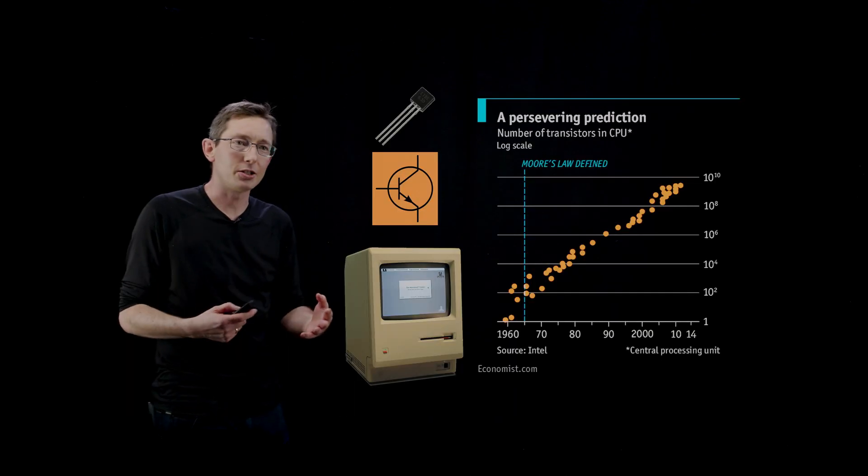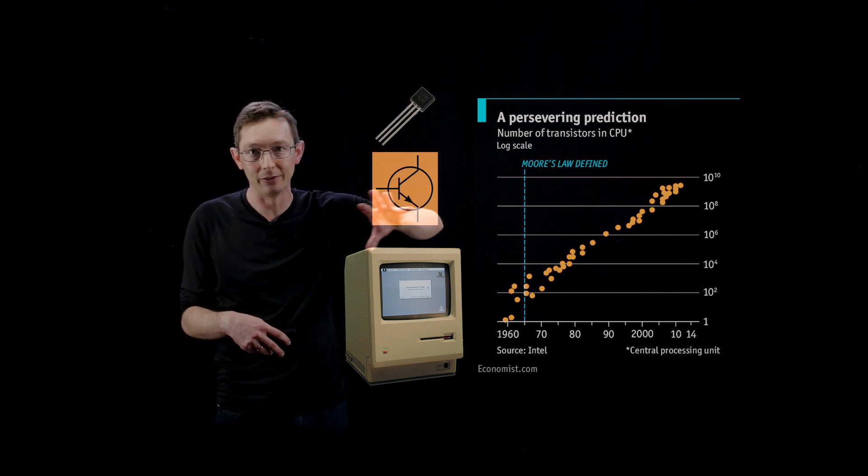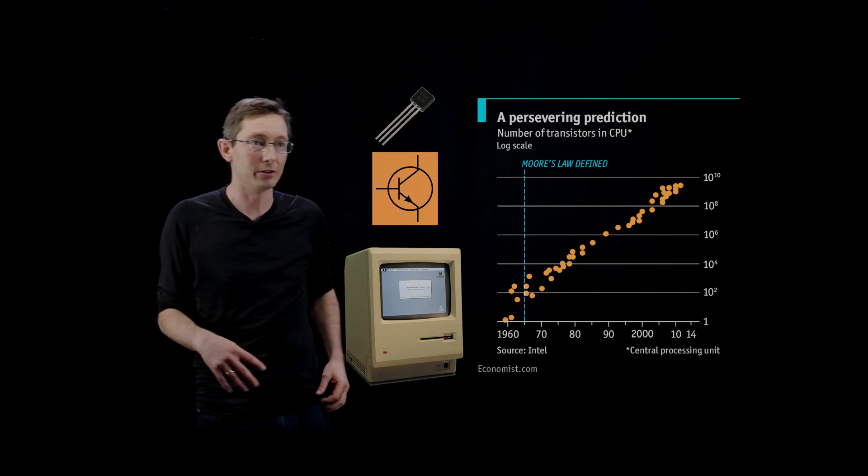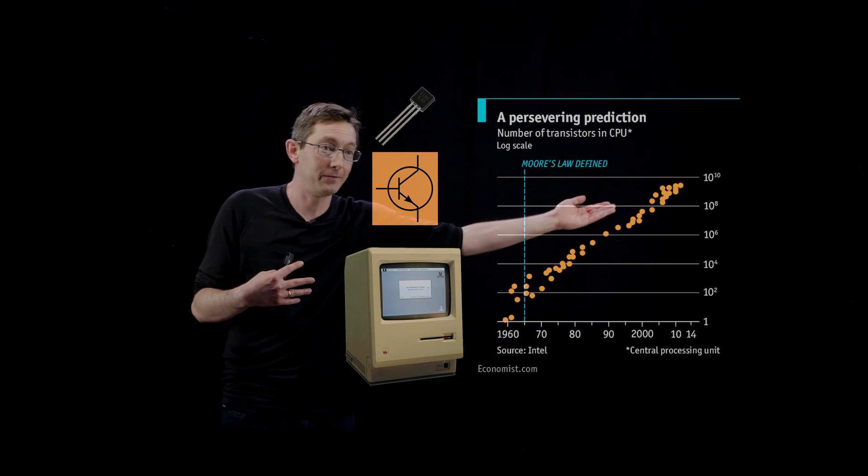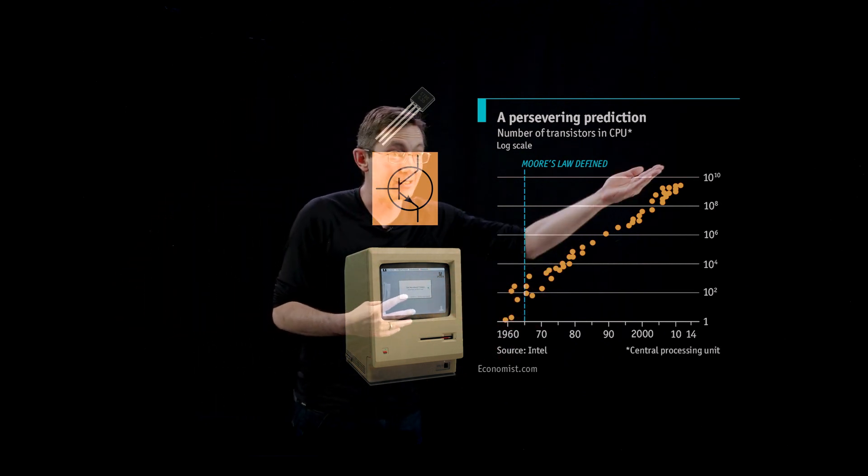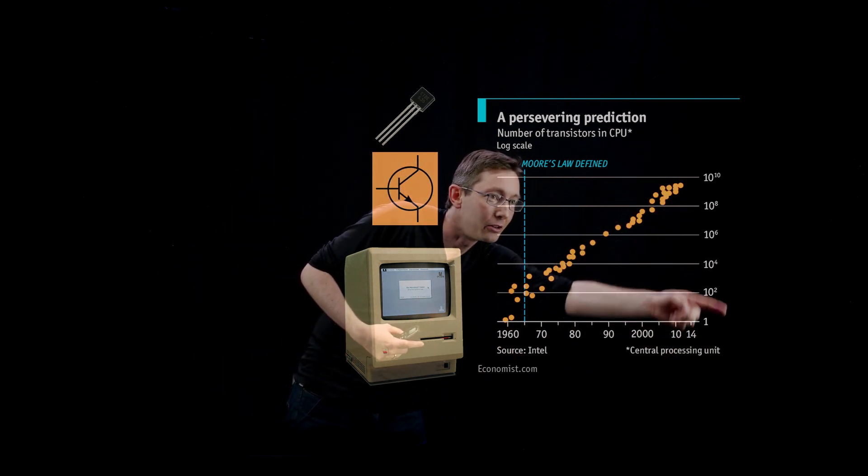And then going back to Moore's law of increasing density of transistors in computers or the increasing number of transistors in computers. You can see that over decades, over five decades, this has very nicely followed this log linear progression. So you'll notice here the y-axis is on a logarithmic scale.